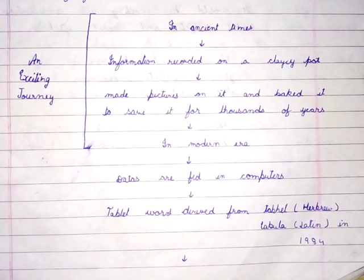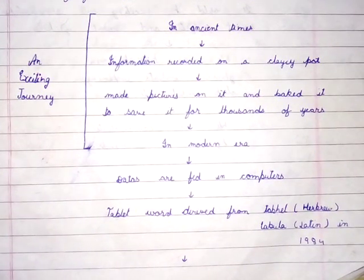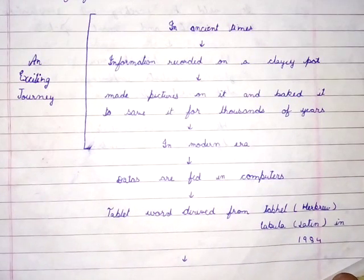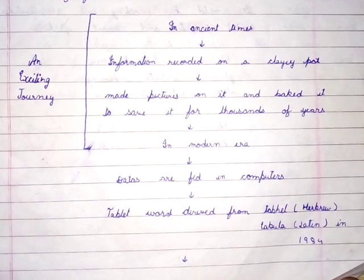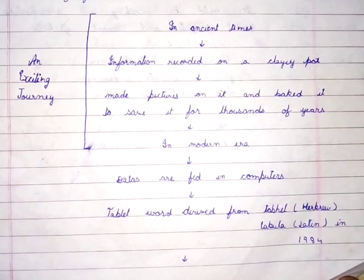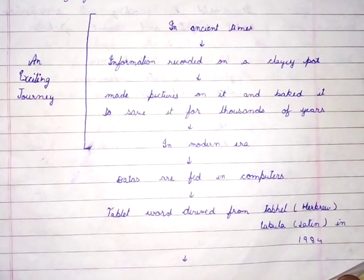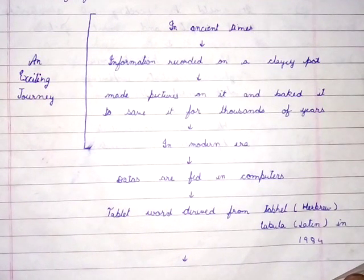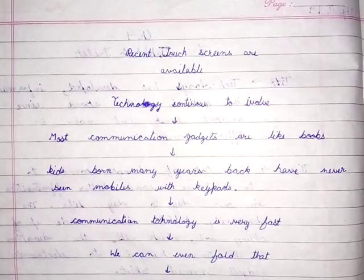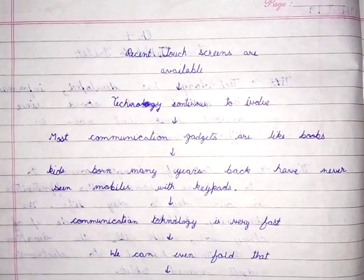Let's learn the summary. In ancient times, information was recorded on a clay pot — people made pictures on it and baked it to save it for thousands of years. In the modern era, data is fed in computers. The tablet word is derived from 'Tabel' in Hebrew and 'Tabula' in Latin, in 1984. Recent touch screens are available and technology continues to evolve.